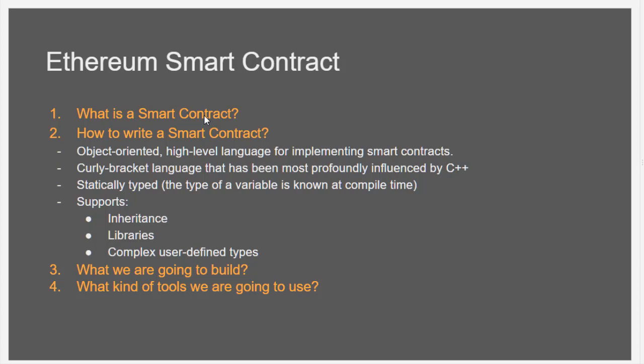Smart contracts can send transactions over the network as well. However, they are not controlled by a user — instead they are deployed to the network and run as a program. Any user account can interact with a smart contract by sending a transaction that executes a specific function inside it.